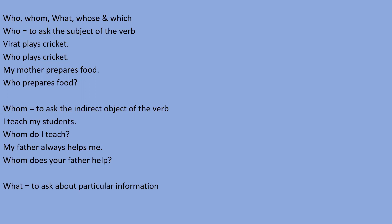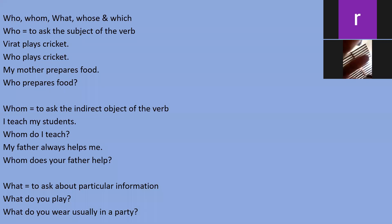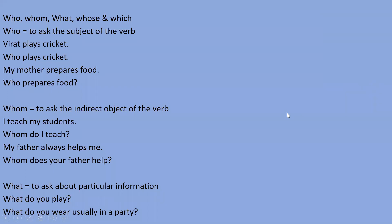What is used to ask about particular information. For example, 'what do you play?' — I want to know which game you play. Another example: 'what do you wear usually in a party?' — I want to know the particular dress or style you wear at a party. So when we want to know particular information, we use what.